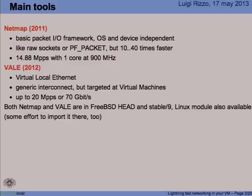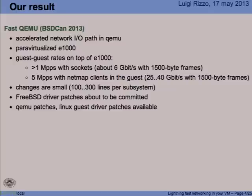A follow-up of this work was Vale switch, which is basically a software Ethernet bridge that uses the same API on ports as NetMap. It was designed as a generic interconnect; however, our goal was to use it to interconnect virtual machines. It's interesting for a number of applications, including testing things you'd later run on a 10 gig interface using NetMap. You can really stress test your application even without hardware, and possibly even at speeds faster than the 10 gigabit limitation the NIC will enforce. Vale runs up to 20 million packets per second per port, or 70 gigabit per second with large packets — 1,500 bytes.